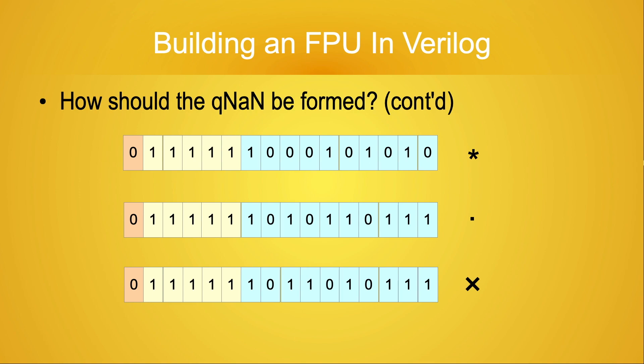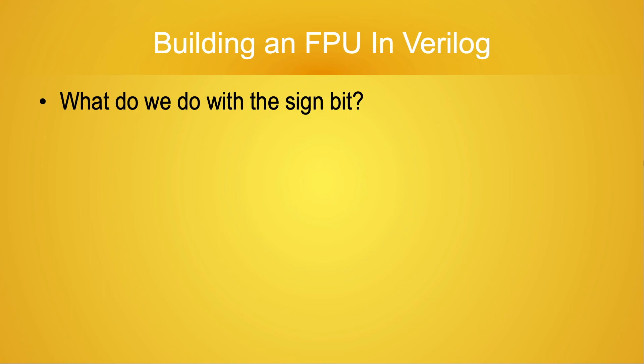There's one minor bit I haven't yet addressed: the sign bit. When we multiply infinity times infinity, a subnormal, or a normal number, how do we get the sign bit? This works pretty much like you would expect.